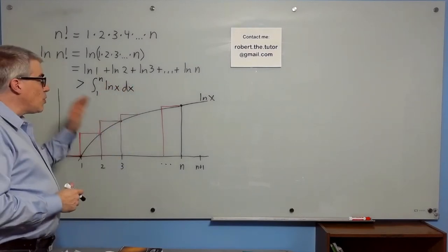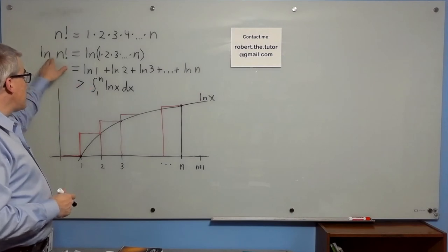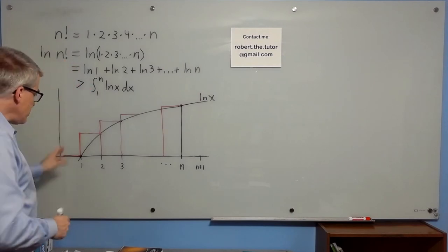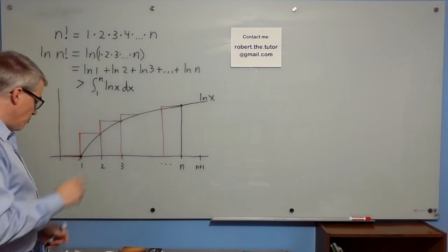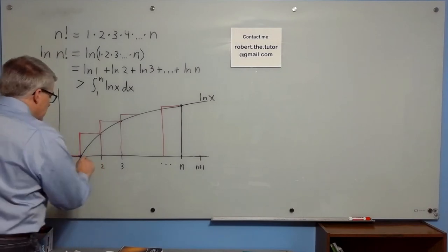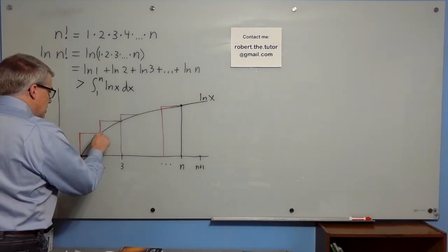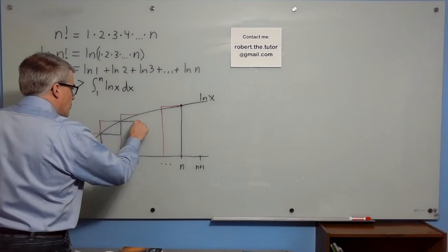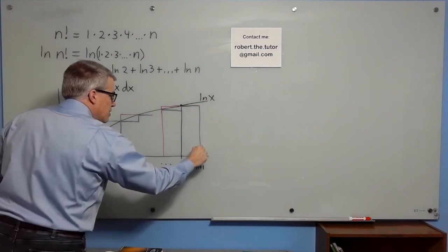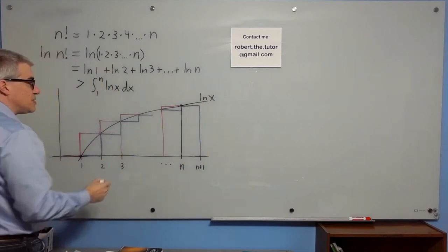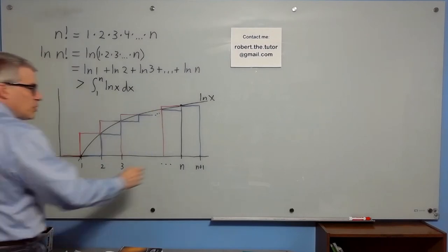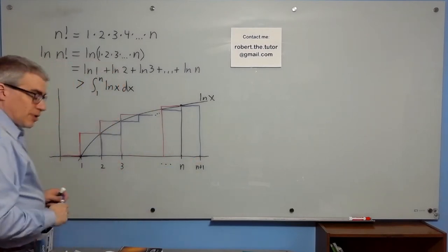We can also work out an overestimate of natural log of n factorial. If we take all the boxes and shift them 1 to the right, so that we have it like this, and like this, and so forth, then all the area is underneath the curve instead of above it.